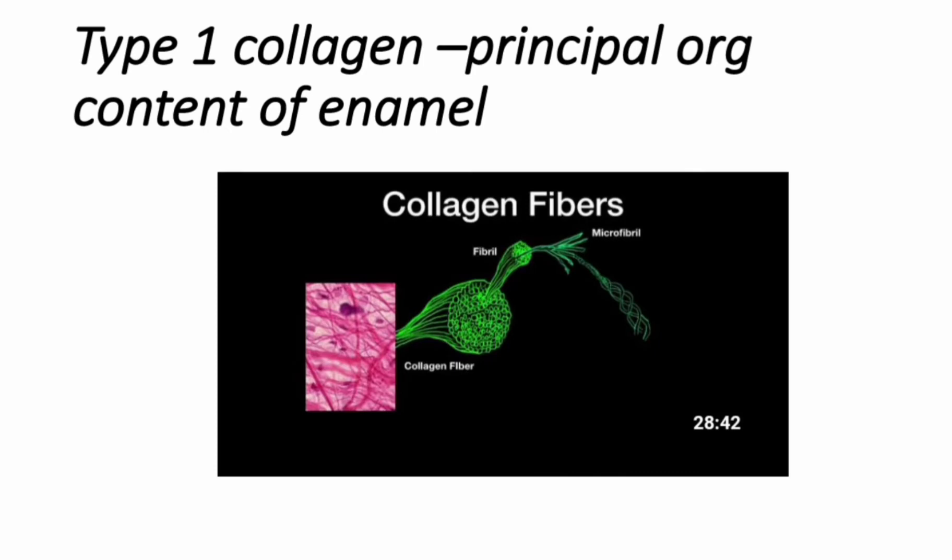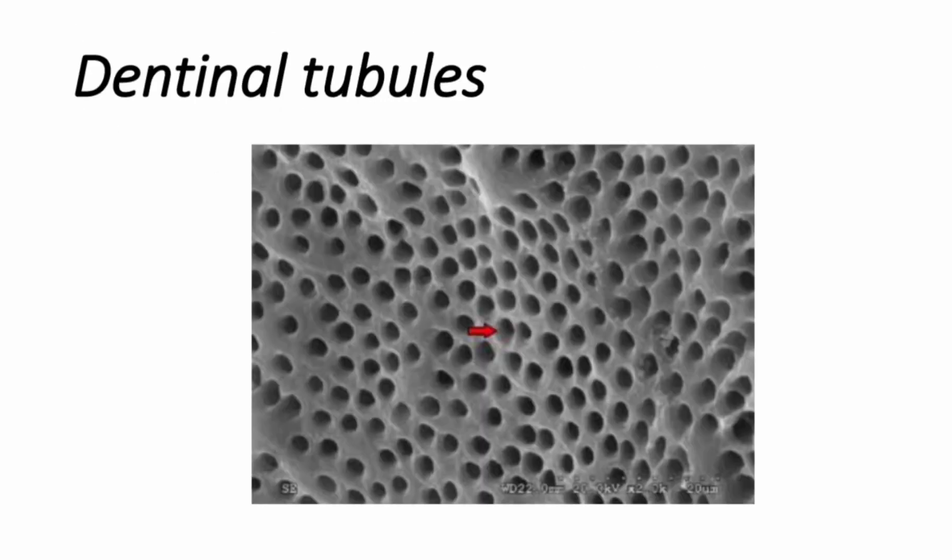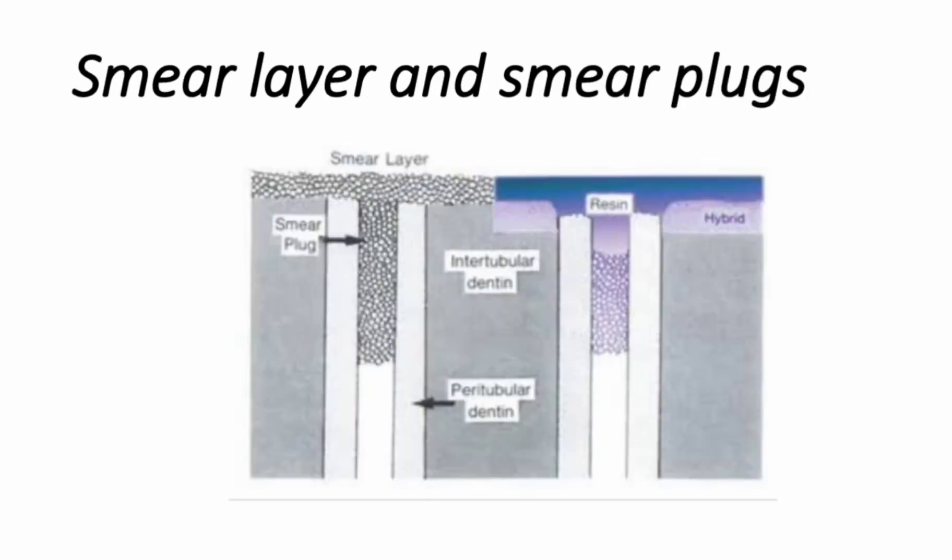Type 1 collagen is the principal organic content of dentine. Dentine is an intrinsically hydrated tissue penetrated by fluid-filled dentinal tubules. Dentinal tubules connect the pulp with the dentino-enamel junction. The constant pressure from the pulp causes fluid to move towards the DEJ. Cut dentinal surfaces form a unique structure called the smear layer, which we have already discussed; the link will be provided in the description box.